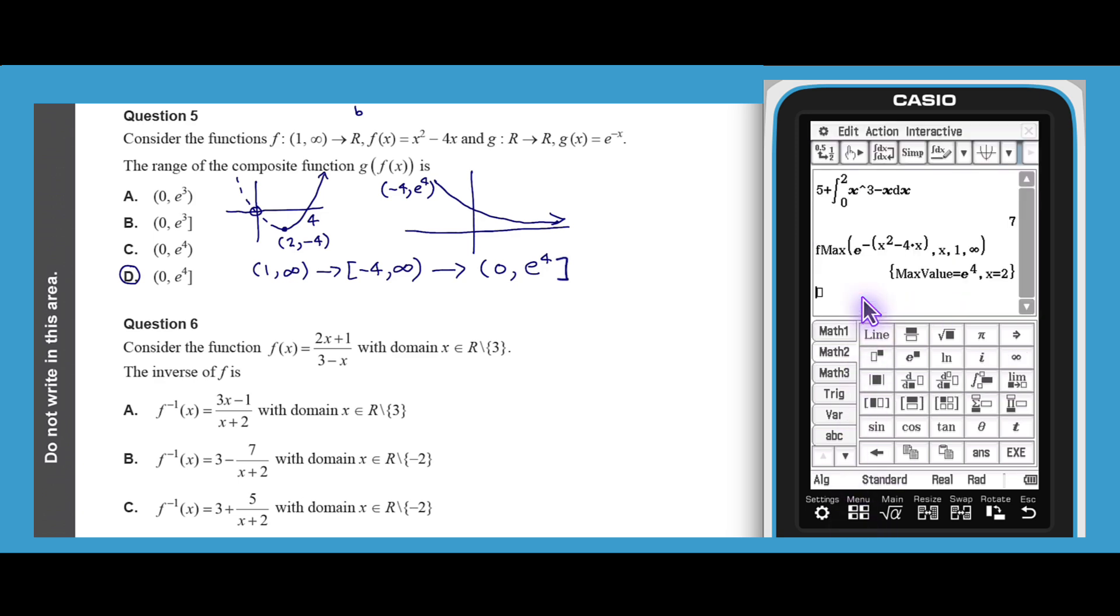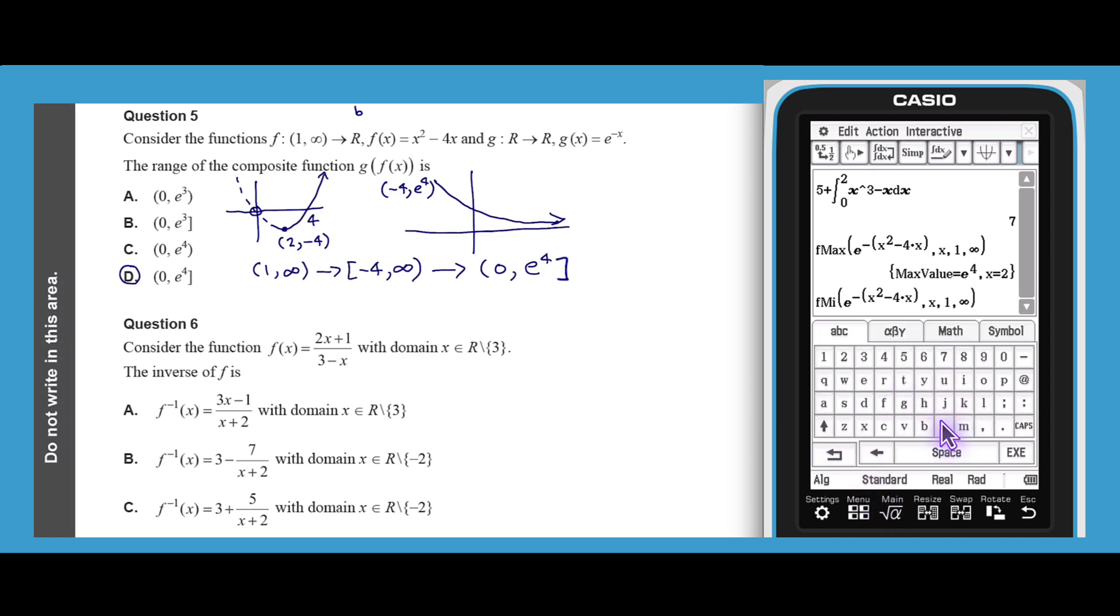For f min, a similar sequence can be followed, but I prefer to duplicate the f max command and then edit it using the ABC keyboard to find the function's minimum over the same domain. With this information, we can see that g of f of x has a limit of 0 as x approaches infinity and a maximum value of e to the power of 4, giving us the range found previously.